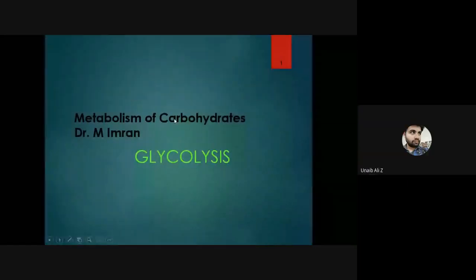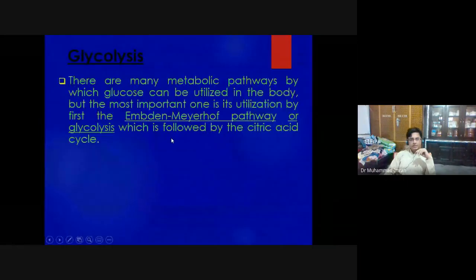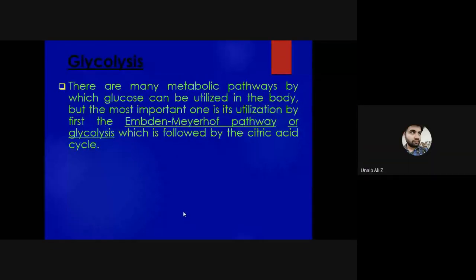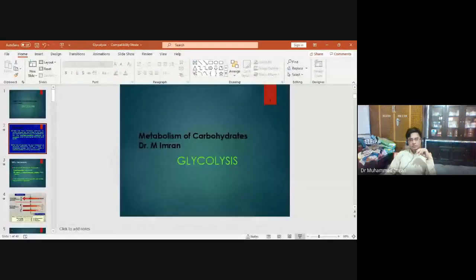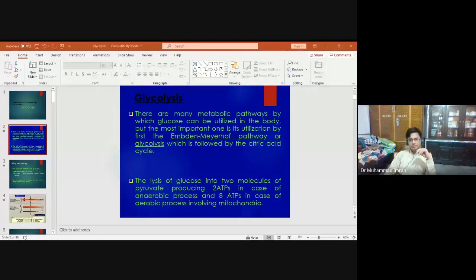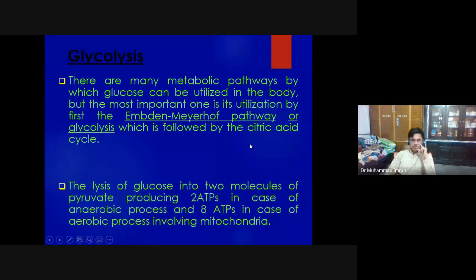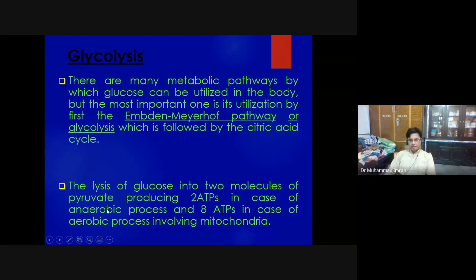Today we will discuss what is glycolysis. There are many metabolic pathways by which glucose can be utilized in the body, but the most important one is its utilization by the Embden-Meyerhof pathway, or glycolysis, which is followed by the citric acid cycle. The lysis of glucose into two molecules of pyruvate is known as glycolysis.